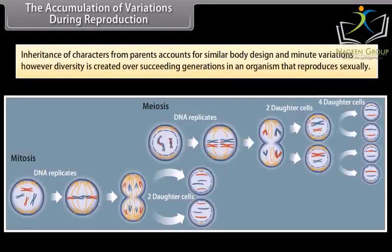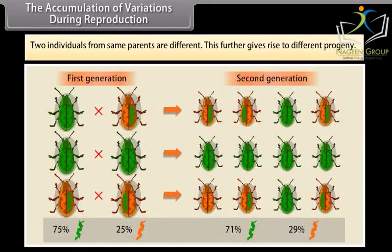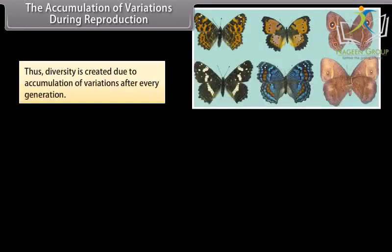Inheritance of characters from parents accounts for similar body design and minute variations. However, diversity is created over succeeding generations in an organism that reproduces sexually. Two individuals from the same parents are different, and this further gives rise to different progeny. Thus, diversity is created due to accumulation of variations after every generation.